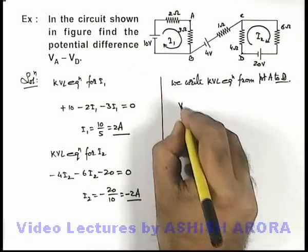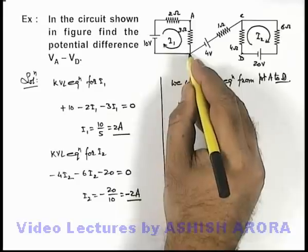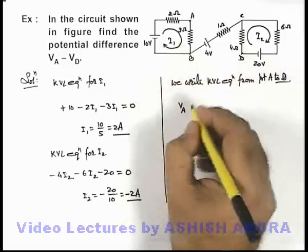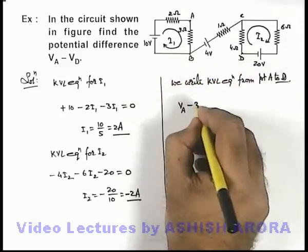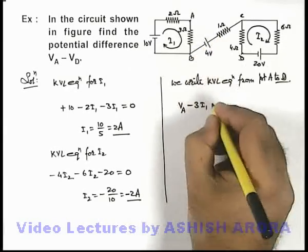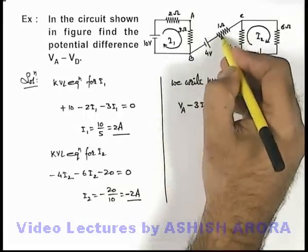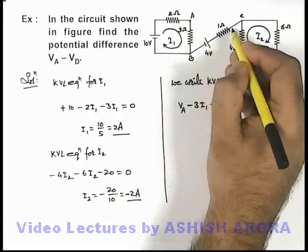And along this direction we can say at point B the potential will be a drop of minus 3i_1. In this direction there'll be a gain due to a 4 volt battery, and no potential drop will occur across this 1 ohm resistance as no current is flowing in this branch.